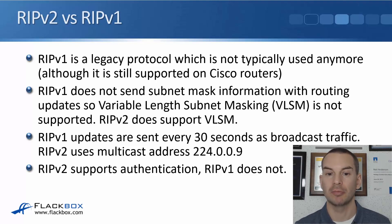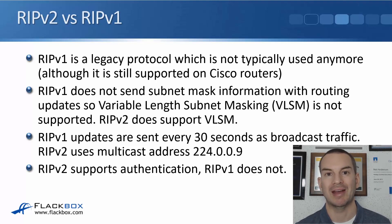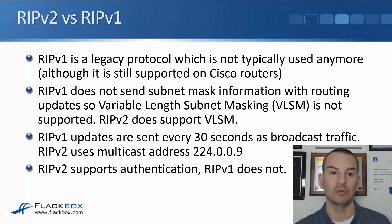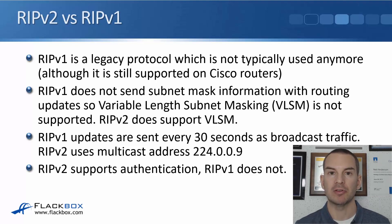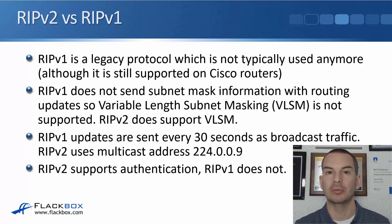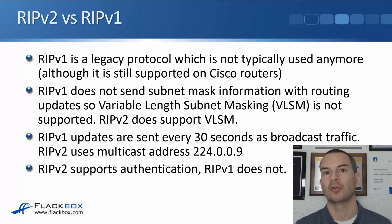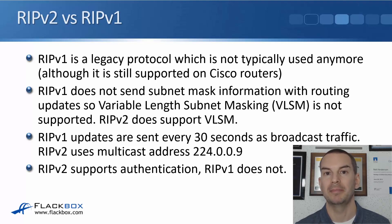RIP version 2 does support VLSM. RIP version 1 updates are sent every 30 seconds as broadcast traffic, so everything hit by that traffic in the subnet has to process it. RIP version 2 uses multicast address 224.0.0.9, making it more efficient. RIP version 2 also supports authentication, allowing a password on both sides of a link so routers won't form an adjacency unless they have the same matching password, providing better security.